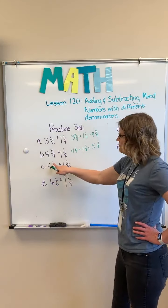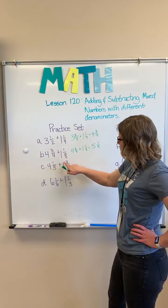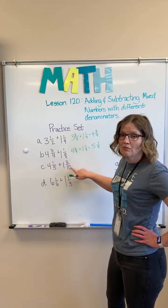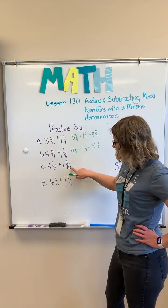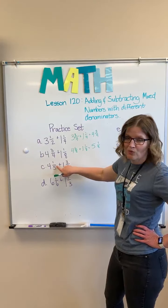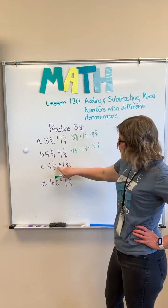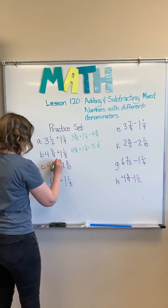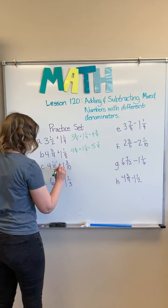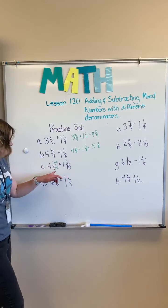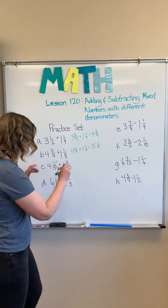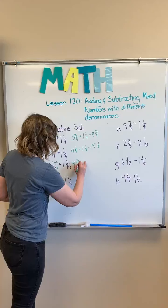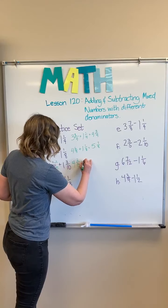Next one, four and one fifth plus one and three tenths. I'm going to keep my ten the same but I'm going to change my one fifth because I know that I can, if I multiply this by two on the top and two on the bottom, we will end up having the denominator of ten. So I'm going to rename this to four and two tenths plus one and three tenths.